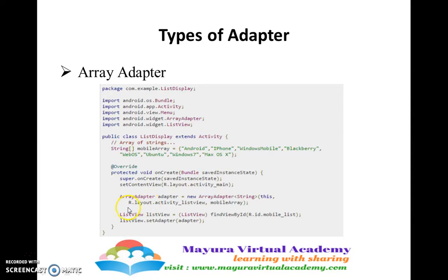We create an instance of list view, and this adapter will be set on the list view. The adapter bridges between the view and the data and displays the list view to the user. This is how the array adapter works.